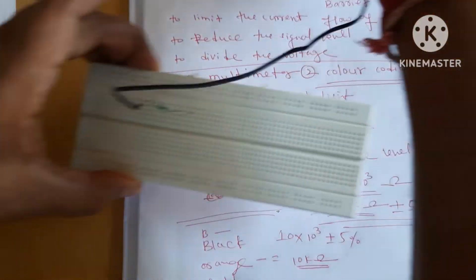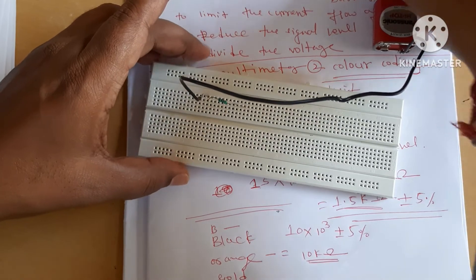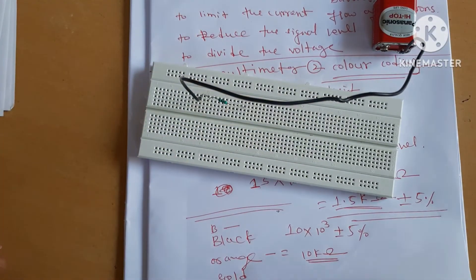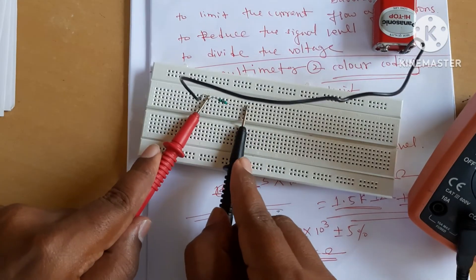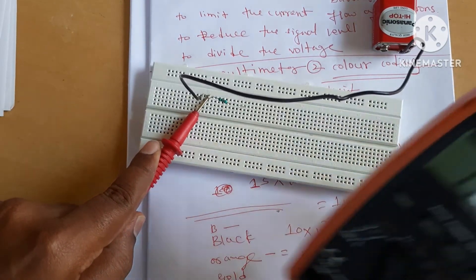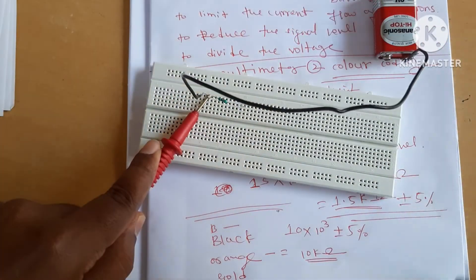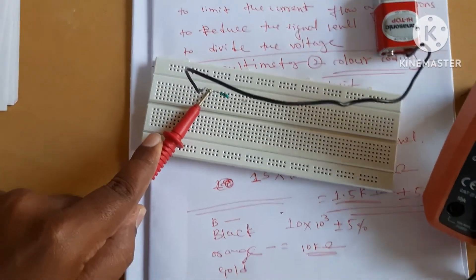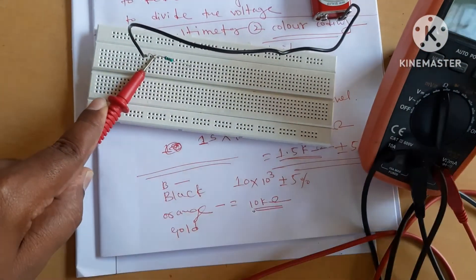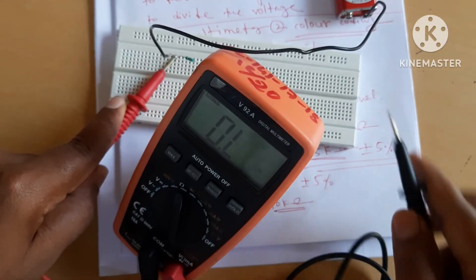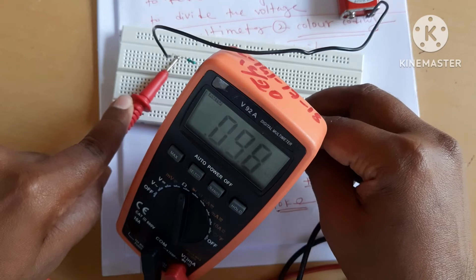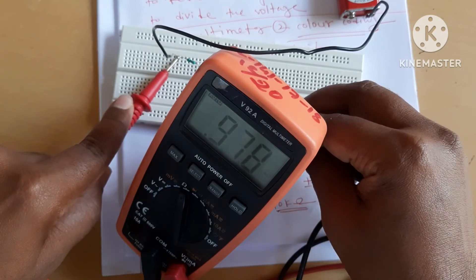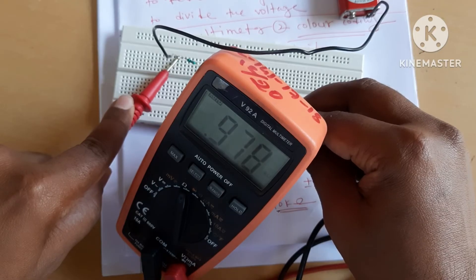Now we will quickly check how the resistor opposes the flow of electrons or current. We have a 1K resistor here. With a 9-volt battery connected, we measure the current. The multimeter reads approximately 0.978 — approximately 1 kilo-ohm.